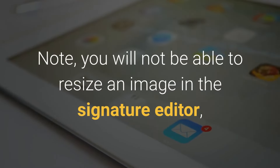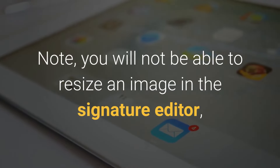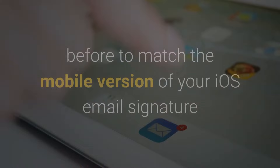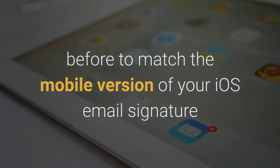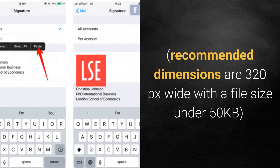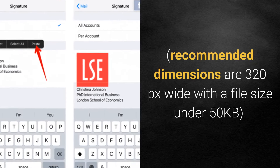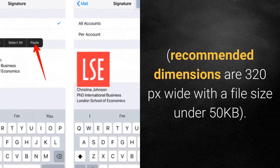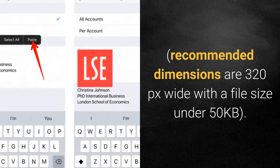Note: you will not be able to resize an image in the signature editor, so you would need to do it beforehand to match the mobile version of your iOS email signature. Recommended dimensions are 320px wide with a file size under 50 kilobytes.